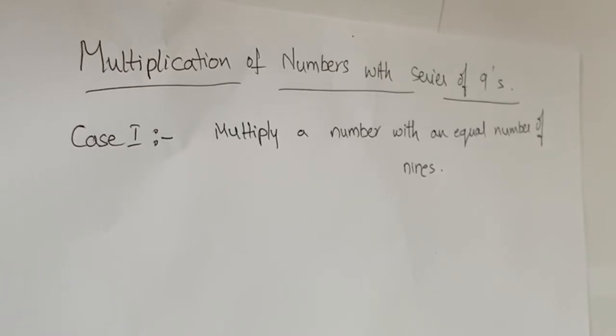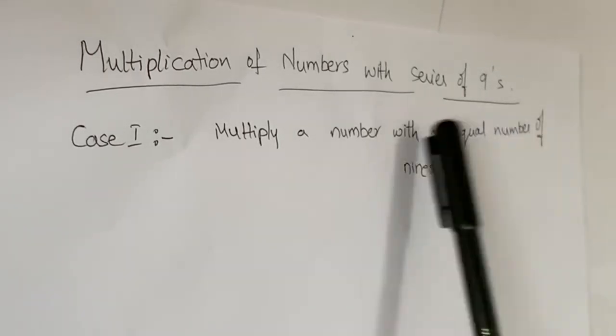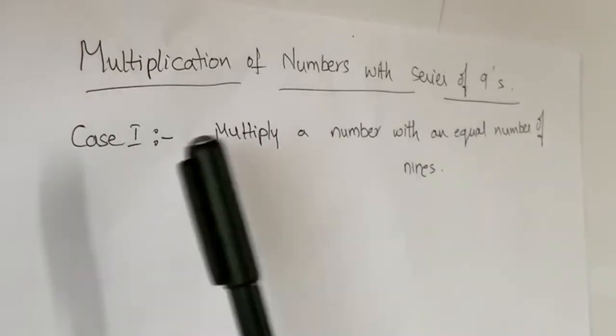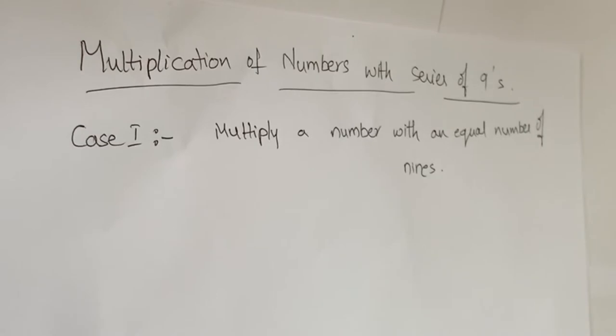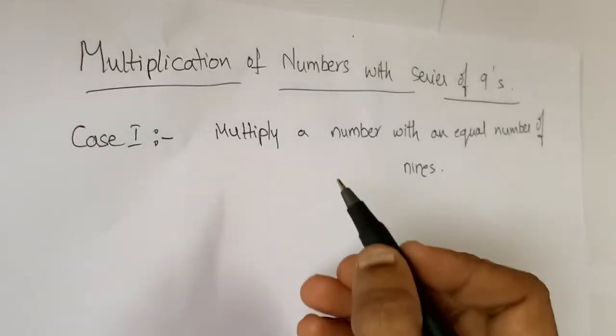We are going to learn about the multiplication of numbers with the series of nines by easy method. In competitive exams, time is a very important factor, so if you save four or five seconds, it matters a lot. That's why you have to know the shortcuts and tricks.